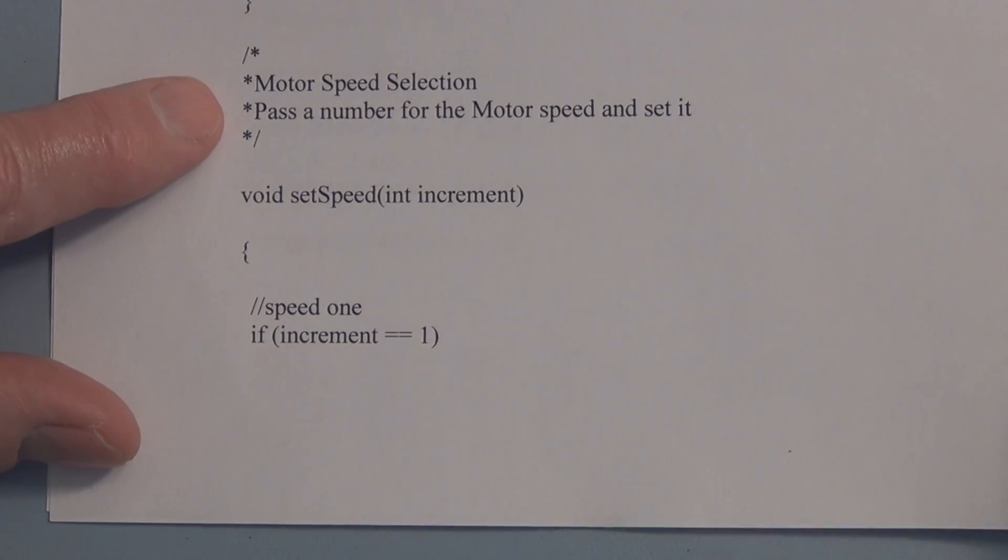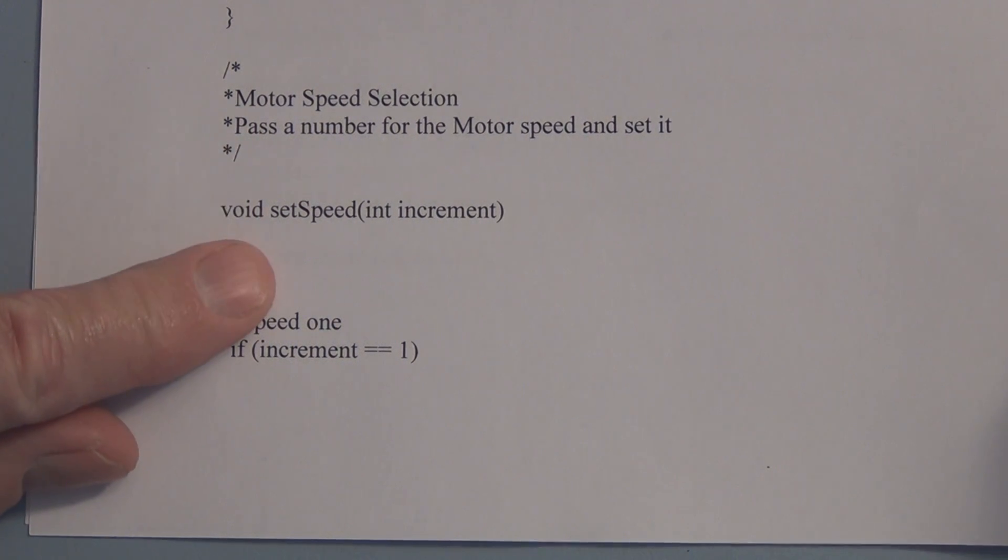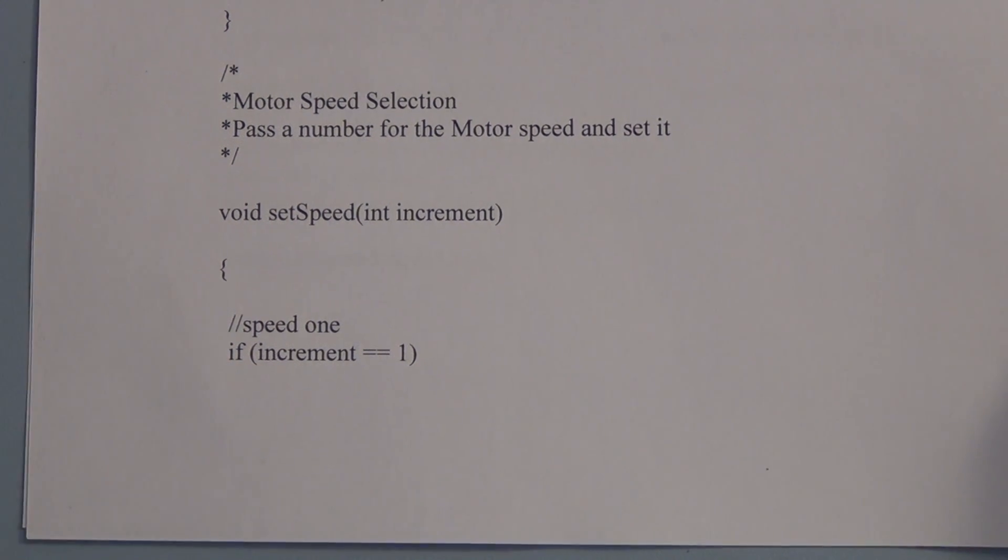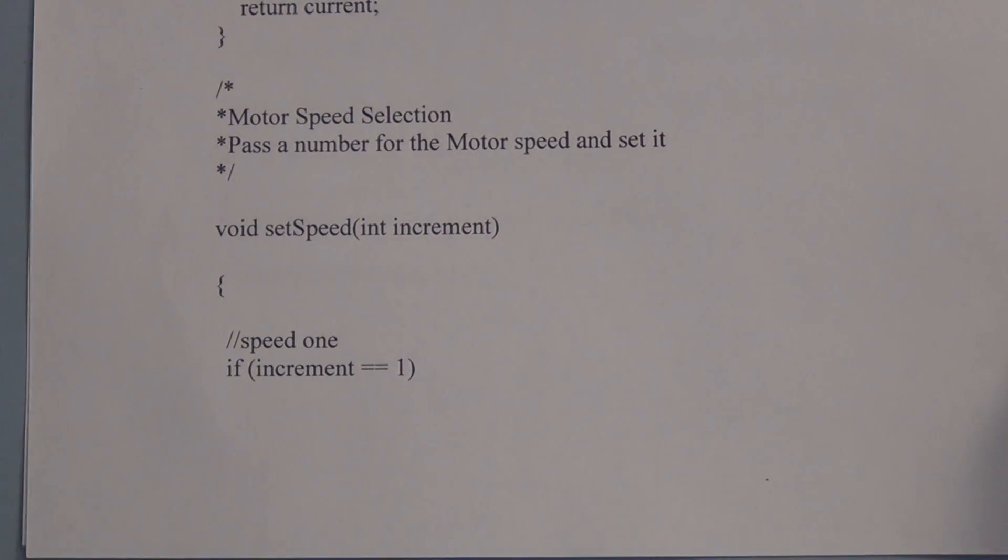And this here is the motor speed selection function. So we're going to pass a number to this and that number determines the speed of the motor and the value. It's going to determine the value that we do an analog write, which adjusts the pulse width modulation on pin 9. So this is speed 1.